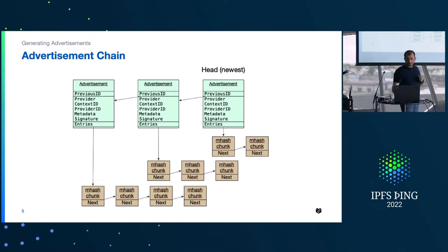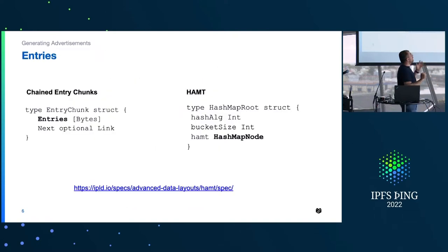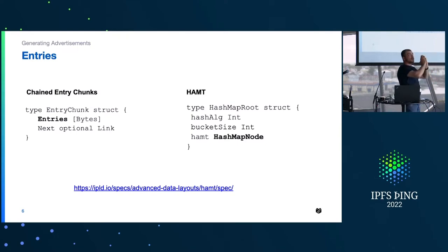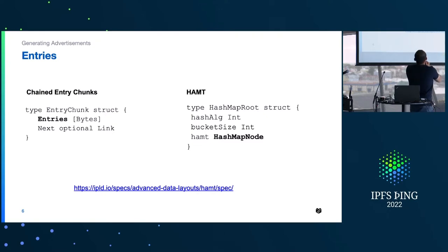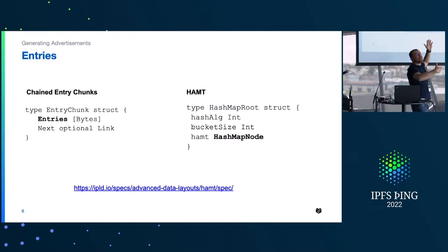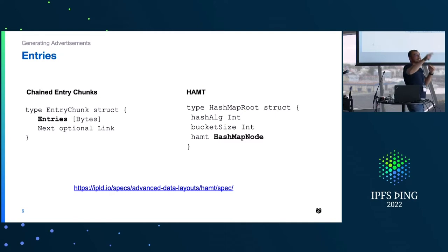There are two kinds of entries. The first is an entry chunk, which is basically an array of bytes — and remember, multihashes are just bytes: a multicodec code and a digest. It also has a link to the next chunk. The entry chunk type can contain multihashes in a single message, and the next link enables chunking, implementing a pagination mechanism on top of IPLD data.